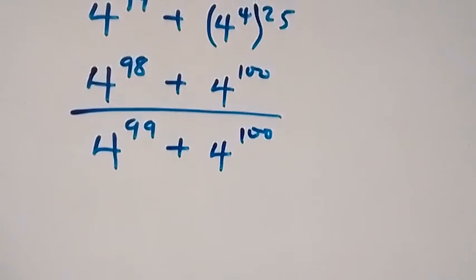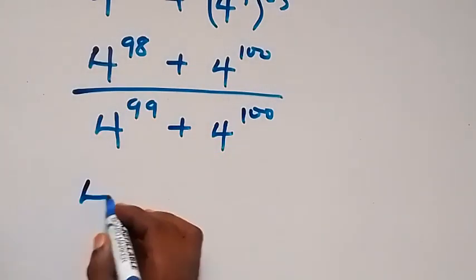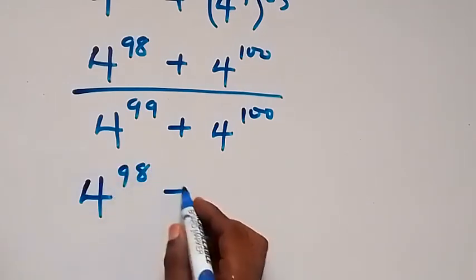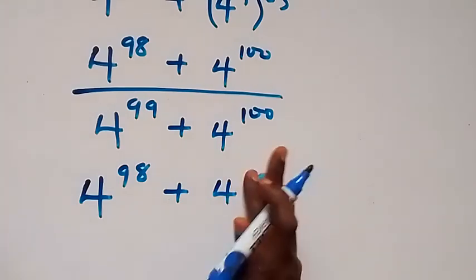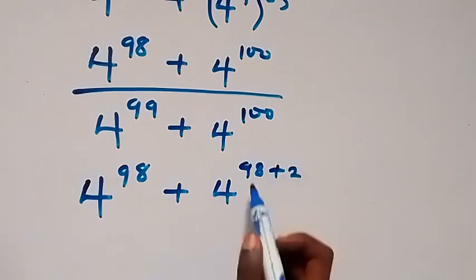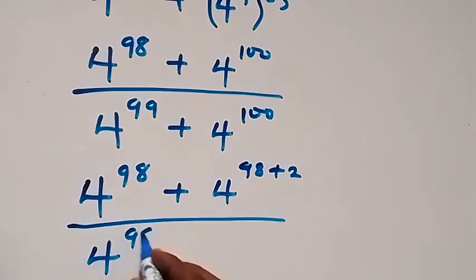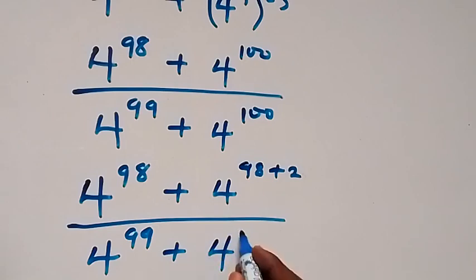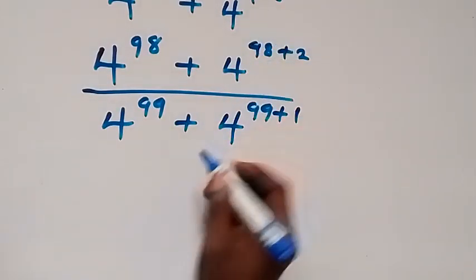In the next step, let's rewrite 4 raised to power 100 as 4 raised to power 98 plus 2, and similarly rewrite 4 raised to power 99 as 4 raised to power 99 plus 1, applying the law of indices again.